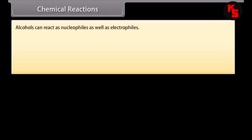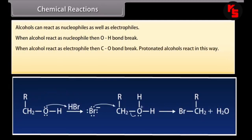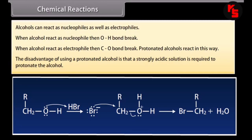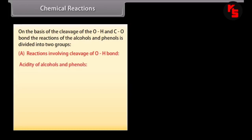Alcohols can react as nucleophiles as well as electrophiles. When alcohol reacts as a nucleophile, the O-H bond breaks. When alcohol reacts as an electrophile, the C-O bond breaks. The disadvantage of using a protonated alcohol is that a strongly acidic solution is required to protonate the alcohol. On the basis of cleavage of the O-H and C-O bonds, reactions of alcohols and phenols are divided into two groups: reactions involving cleavage of the O-H bond, and reactions involving cleavage of the C-O bond.